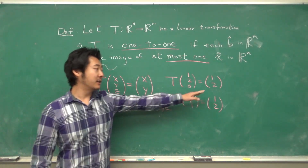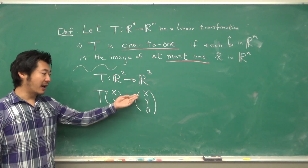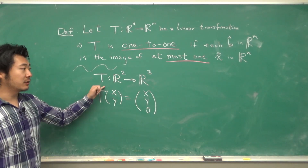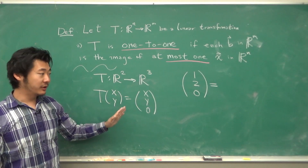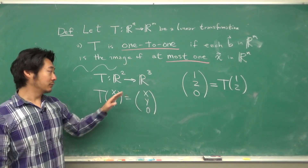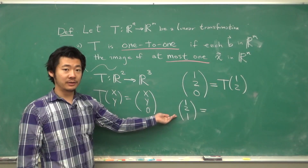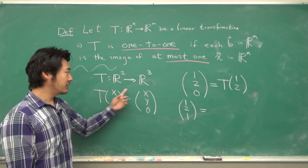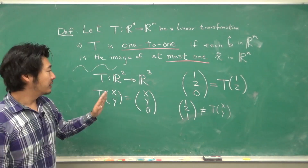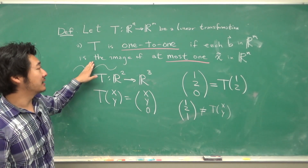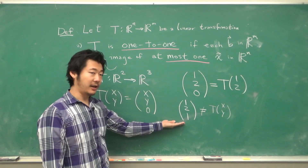We want to ensure that each image can come from only one possible preimage. Consider the transformation where the vector (X, Y) maps to (X, Y, 0), a linear transformation from R2 to R3. This is indeed 1-to-1: the vector (1, 2, 0) can only come from (1, 2). What about (1, 2, 1)? There are no vectors that map to it — but that is not a problem, since in the definition, each B is the image of at most one X, so zero preimages is allowed.